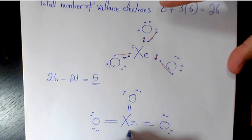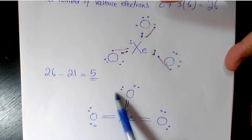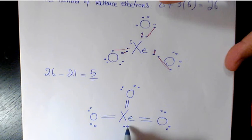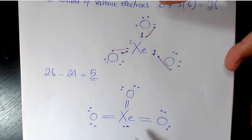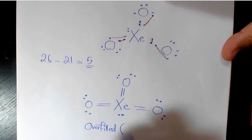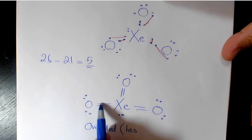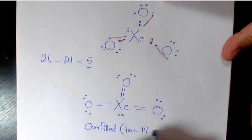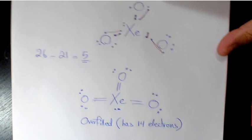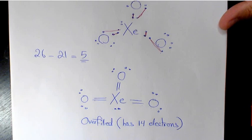So we have a double bond to each oxygen. The oxygens now follow the octet rule with 8 electrons each. Xenon, however, does not follow the octet rule — it is overfilled with 14 electrons total, which is much more than 8. So xenon is hypervalent in this structure. That is the final Lewis structure for xenon trioxide.